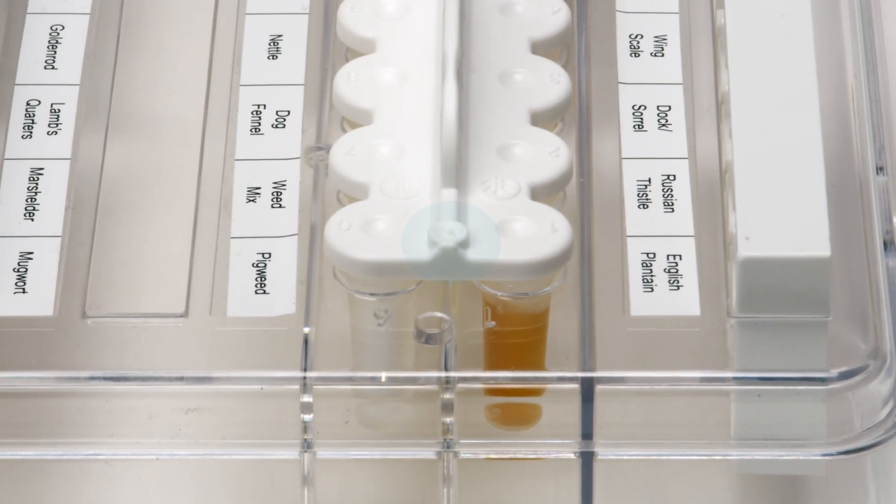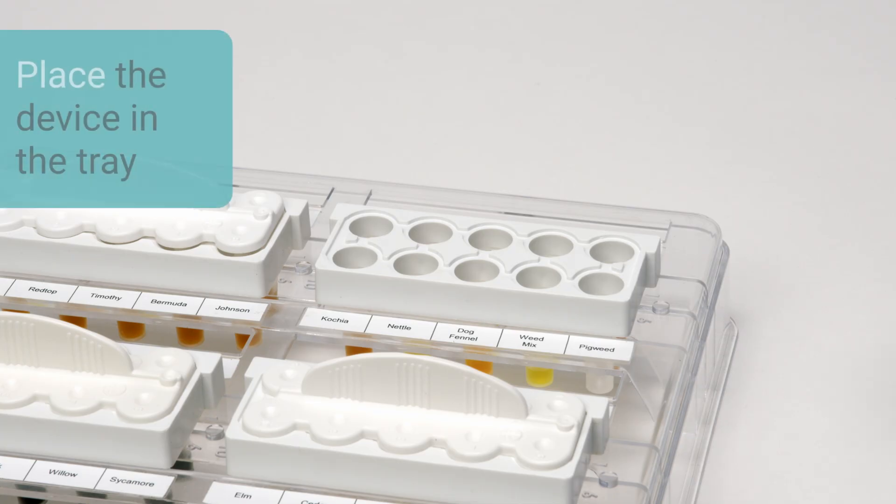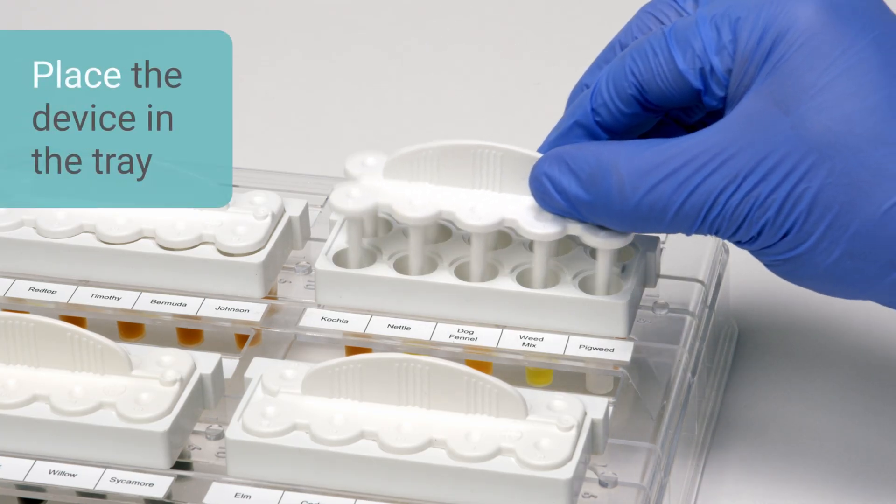Ensure the small indented circle on the Comforten device is pointing towards the orientation spot on the tray. Then place the tips in the pre-filled reservoirs.